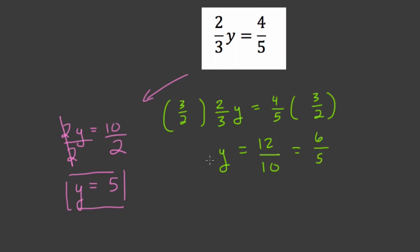And that works. We can plug it back in and test it. You'll see 6 fifths times 2 thirds. If we do multiply that out, we do get 4 fifths.